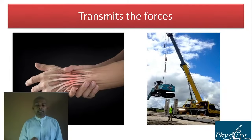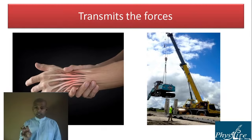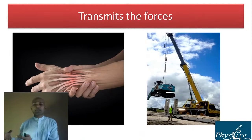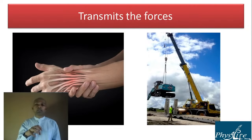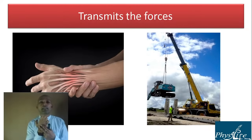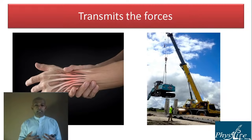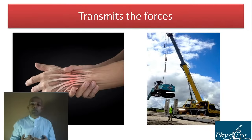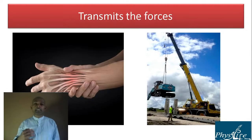Another function of fascia is to transmit forces. Imagine a crane — the motor is near the engine, but forces are transmitted to the effector organ via the rope. Similarly, the contractile force of muscles like extensor carpi radialis longus, originating from the lateral epicondyle, is transmitted to the wrist via fascial structures — the tendons. Force transmission is one of the key functions of fascia.